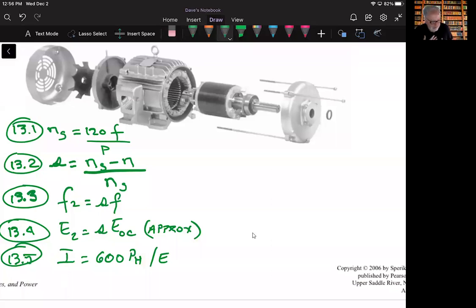So the full load current of a three-phase induction motor can be calculated by means of this equation 13.5. And again, guys and girls, your being able to understand these five equations gives you a particular insight into the operation of a three-phase induction motor.